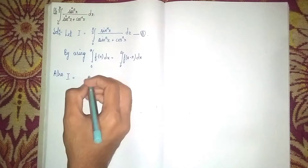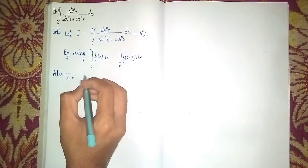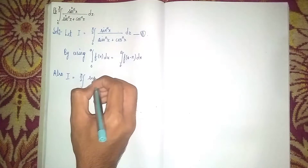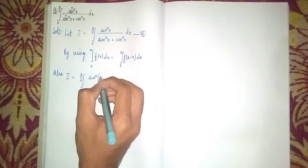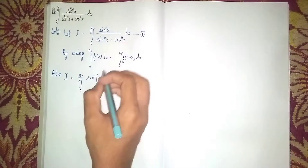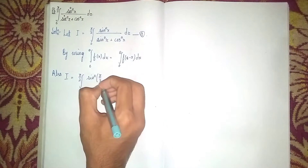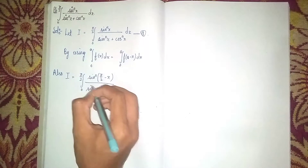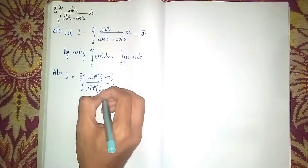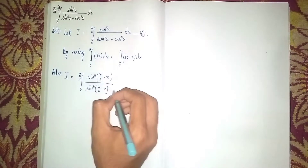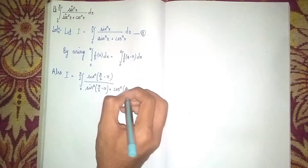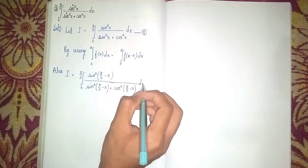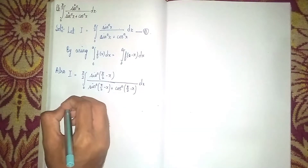So I = ∫₀^(π/2) sin^n(π/2 − x) / (sin^n(π/2 − x) + cos^n(π/2 − x)) dx. Here a is π/2, so we substitute π/2 − x everywhere in the function.